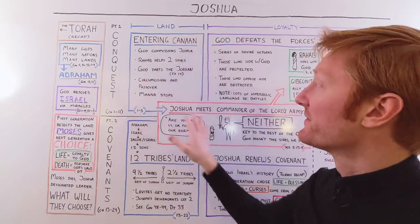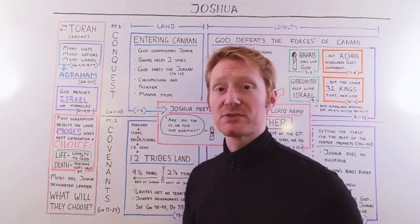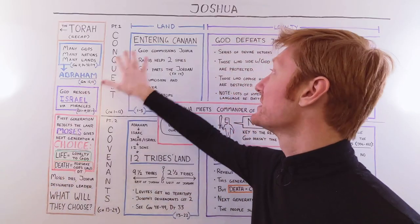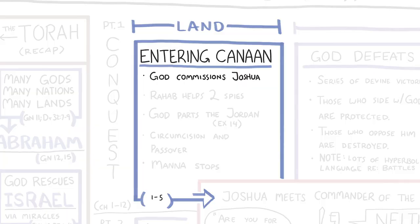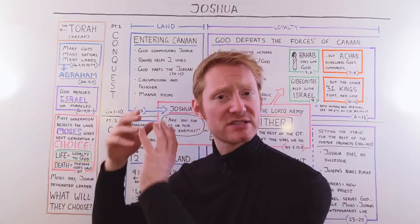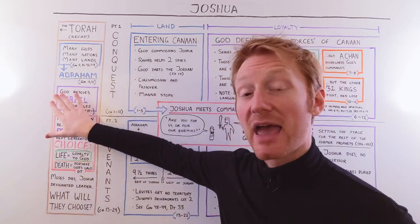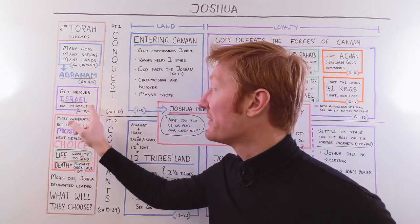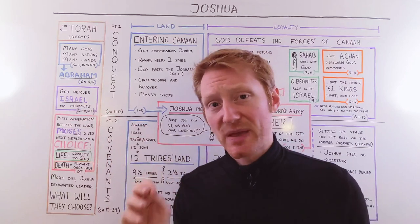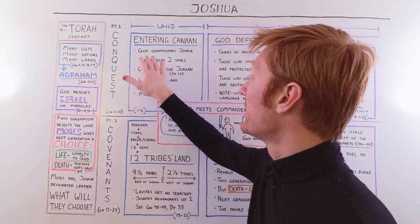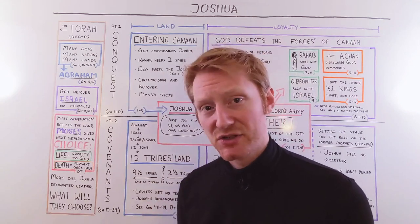In the first five chapters of Joshua — our first section — we see the people of Israel finally entering the land of Canaan after wandering in the wilderness for 40 years. We have God recommissioning Joshua. At the beginning of this book, we meet a prostitute named Rahab. Rahab is a very interesting figure because she is not an Israelite — she's not part of this covenant relationship with God. But she's heard about the miracles that Israel's God worked when he rescued them from Egypt, and so Rahab helps two spies that Joshua sends into the promised land.